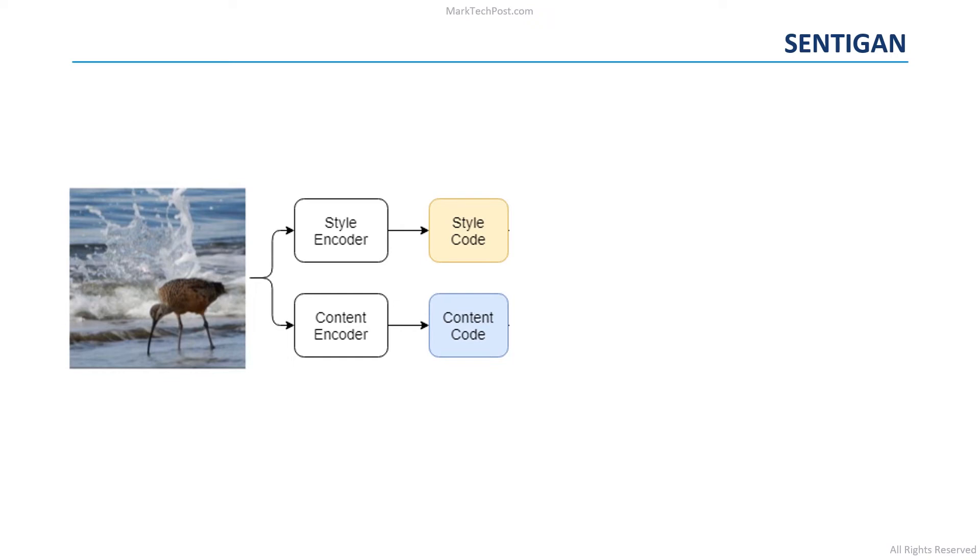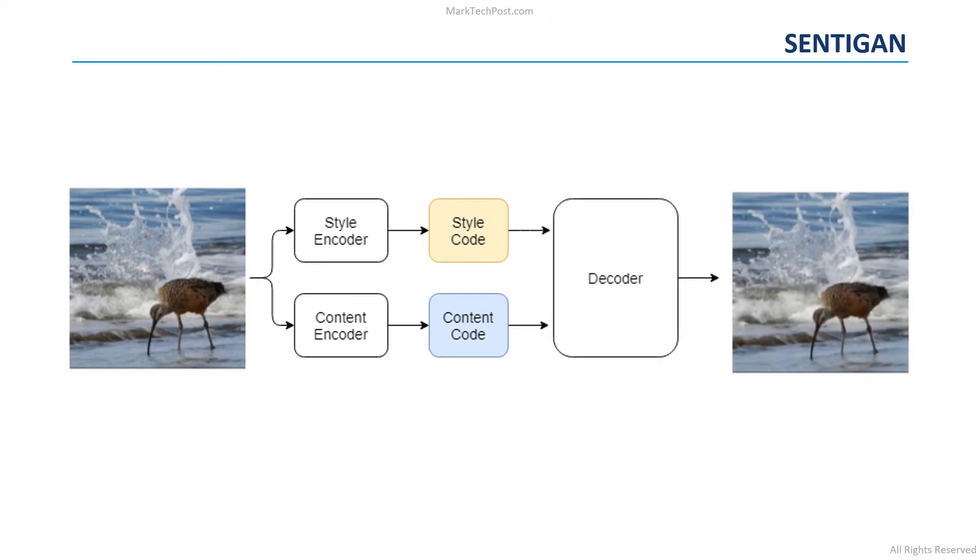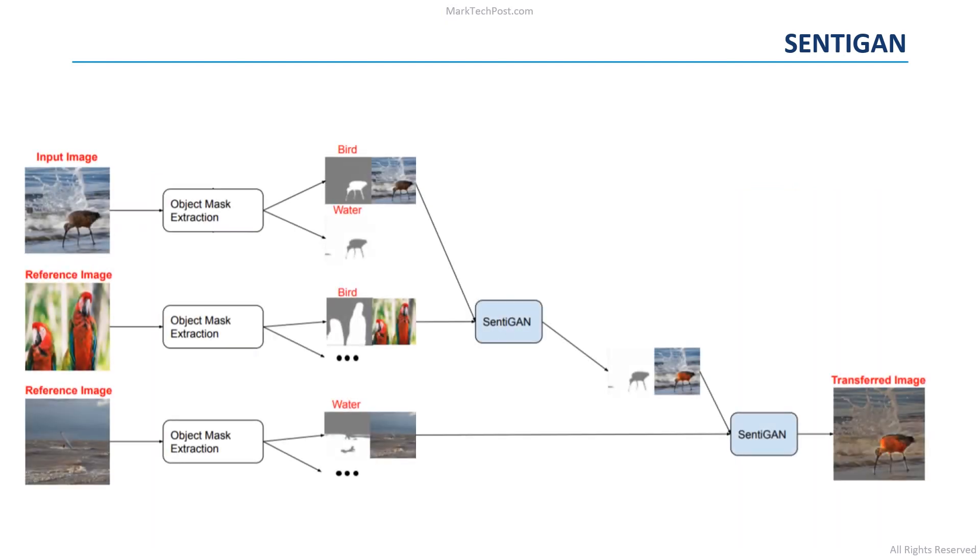In addition, SentiGAN contains a decoder that can generate an image given a content code and a style code as input. At the same time, SentiGAN contains also an object-level decoder that can generate a new image based on the content code of an input image and applying to the object of the input image the style of the objects of a reference image. Hence, after the training process, the idea is to use multiple times this object-level decoder to generate an image that has the same content as the input image while applying to the objects of the input image the style of the objects of different reference images.